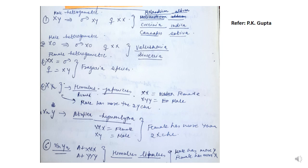In Melandrium album, Coccinia indica, and Cannabis sativa, sex determination is similar to humans. However, in Valendriaeum album, the male is heterogametic but one of the X chromosomes is missing. So in this heterogametic male, males are designated as XO and females are XX.